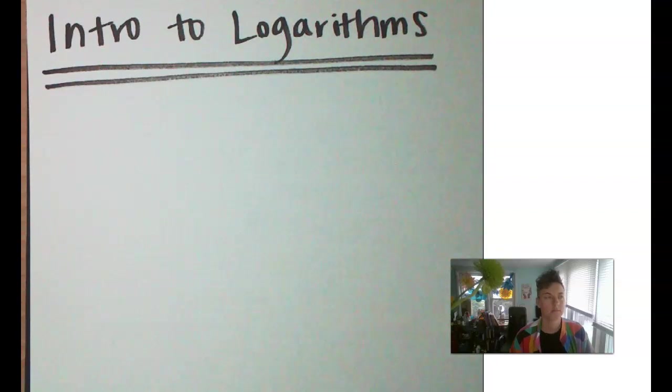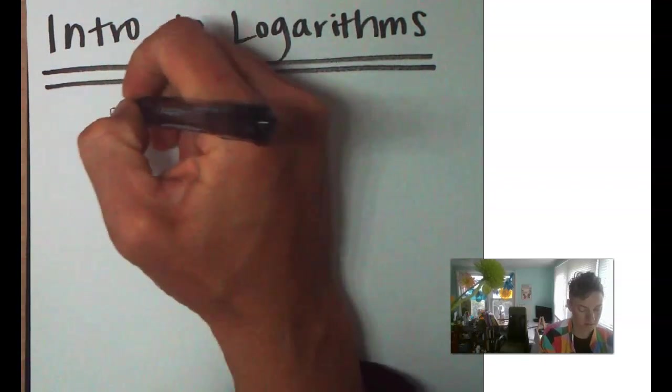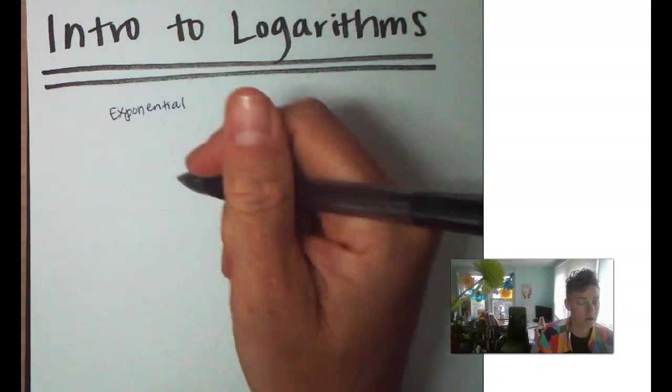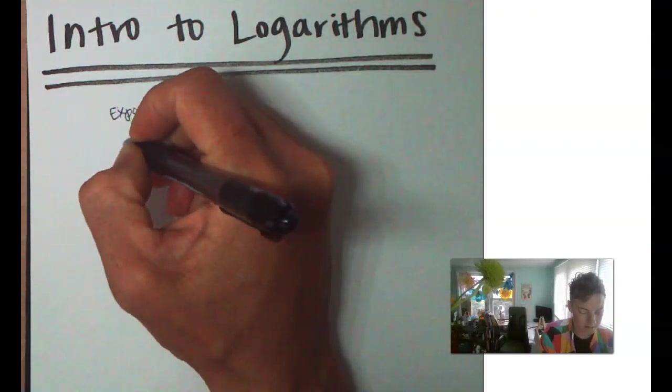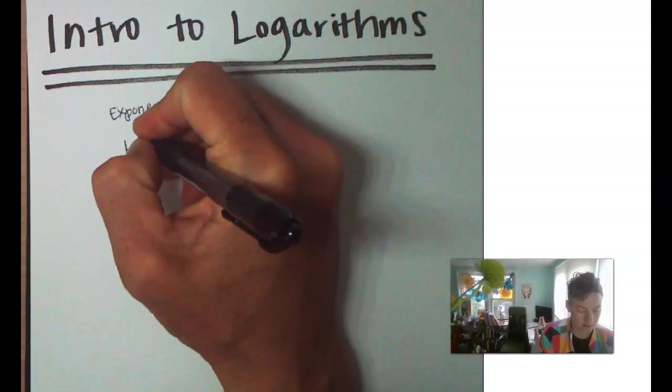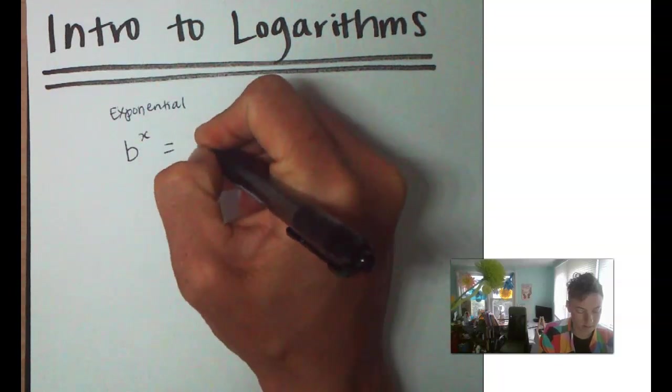Okay, so again, I want to keep relating this back to exponential form. So let's write out our exponential form. Exponential was sum base b to sum power x equal to sum number a.